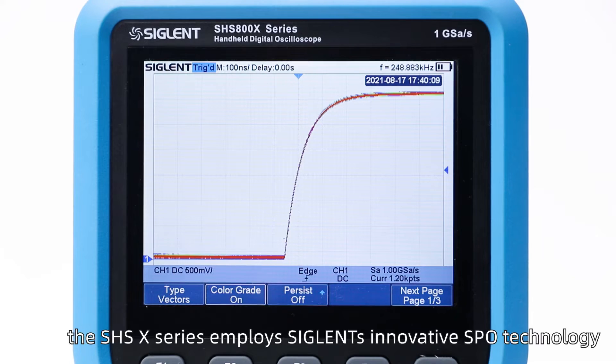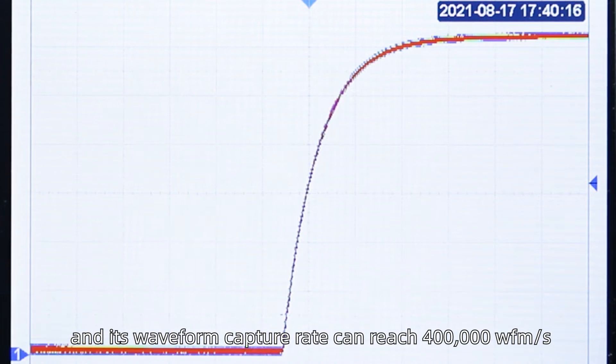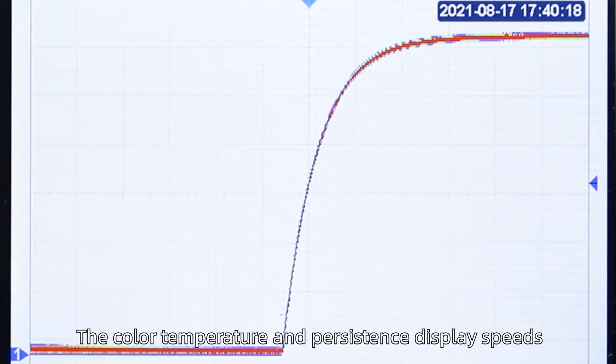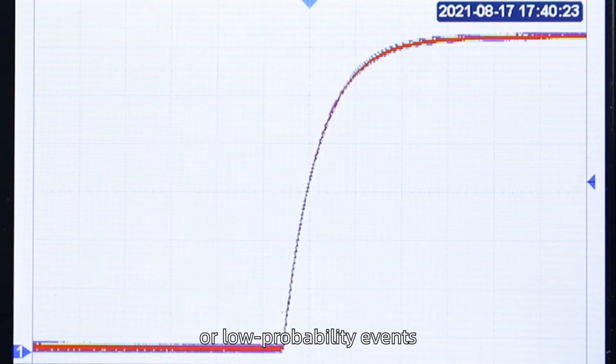In oscilloscope mode, the SHSX series employs Siglent's innovative SPO technology with a waveform capture rate up to 400 waveforms per second. The color temperature and persistence display speeds the capture and identification of unusual or low-probability events.